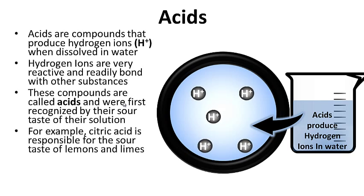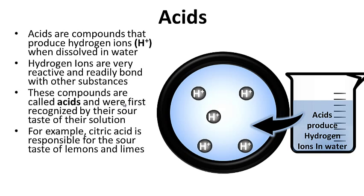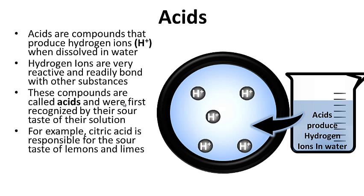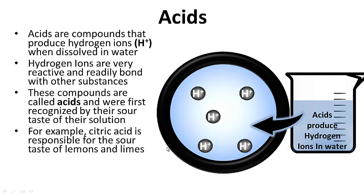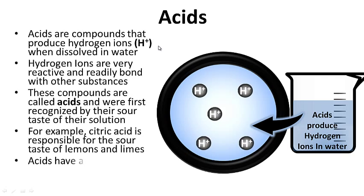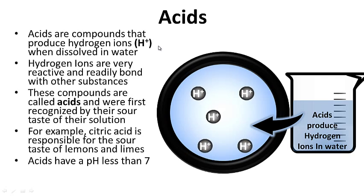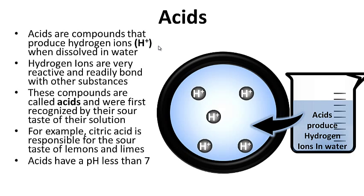For example, citric acid is responsible for the sour taste of lemons and limes. If you've ever had sour candy, it has a lot of hydrogen ions in it, which makes it sour. Acids have a pH of less than 7.